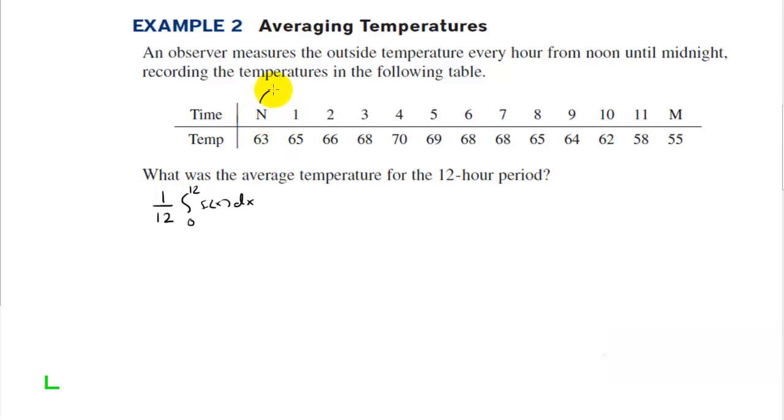Each of these is separated by one hour, so that's going to be the height of the trapezoid is 1. So we have 1 over 12 times one half times 63 plus 2 times 65 plus 2 times 66, and we're going to keep on going until we get to the last one, which will be 55. So this part right here represents the area under the curve, and then to get average value, we're going to have to take that times 1 over 12.